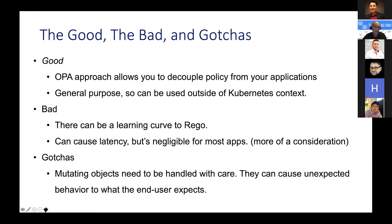The bad: just like anything else, there's a learning curve to Rego. The gotchas: if I have the ability to mutate objects, that needs to be handled with care. Just like infrastructure as code, we want to drive things into source control. If my policy is mutating objects and the runtime result differs from what's in source control, my source control no longer maps what's actually running. Use the mutating webhook with caution.